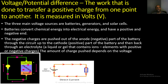Now let's take a look at voltage, or potential difference. Voltage and potential difference are interchangeable — they mean the same thing. Both refer to the work done to transfer a positive charge from one point to another. It is measured in volts, and the unit symbol is V.